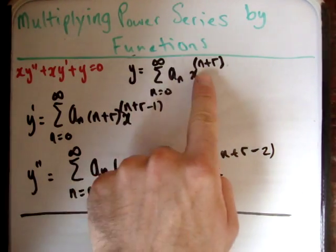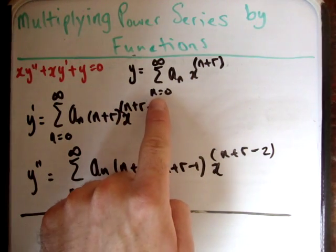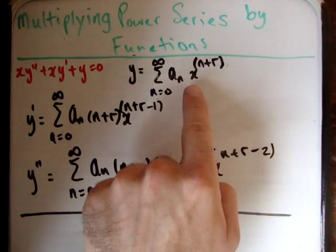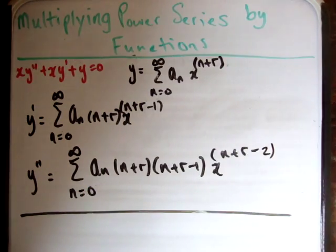So I define my power series here as y is equal to the sum from n equals 0 to infinity of a sub n times x to the n plus r.